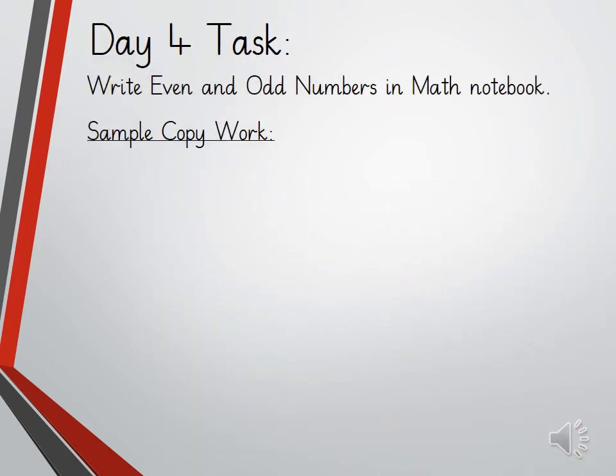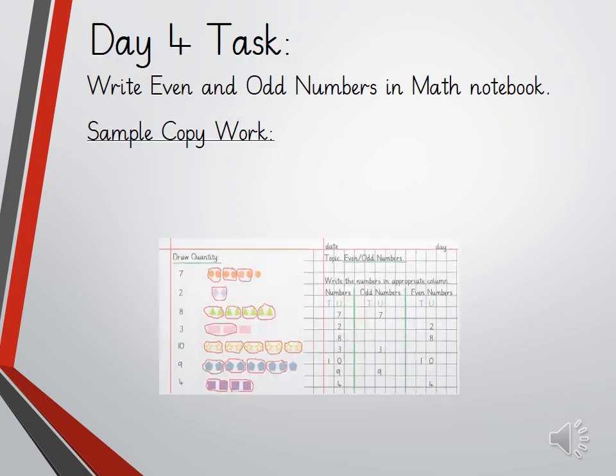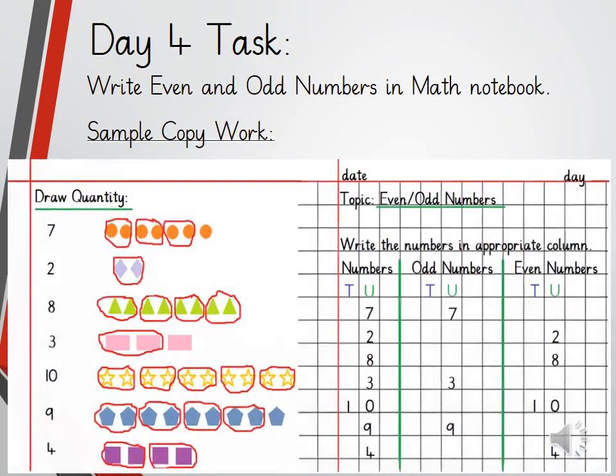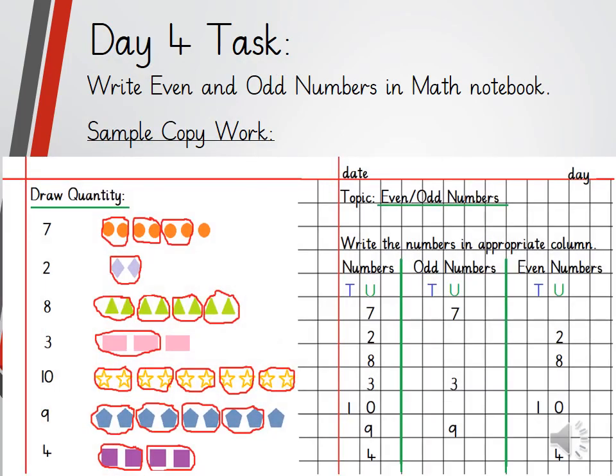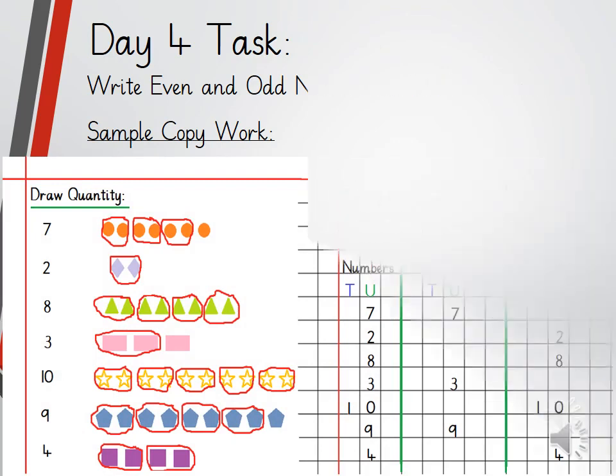On page number 26 of your smart number workbook, look at the numbers very carefully and identify even and odd numbers. Write even numbers in the even numbers column and odd numbers in the odd numbers column. Identify even and odd numbers from the given numbers and write them in your math notebook. A sample copy of the work is given for you.